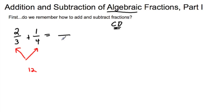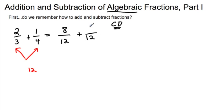Now I'm going to be comparing twelfths. I'm able to compare because I have similar size. In order to get from three to twelve, I multiply by four, so I'm taking two times four — eight-twelfths. And then four times three, one times three. Now I can combine my fractions: eight-twelfths plus three-twelfths gets me eleven-twelfths. The denominators stay the same.